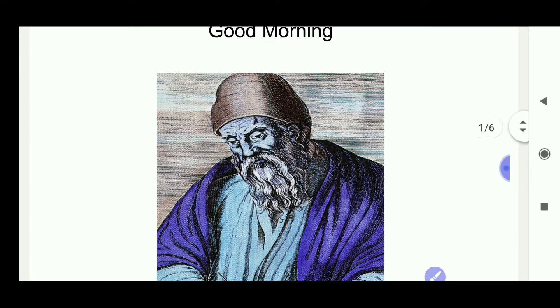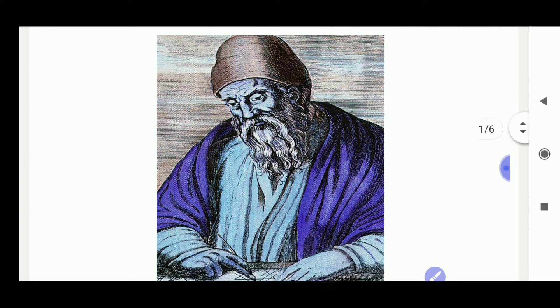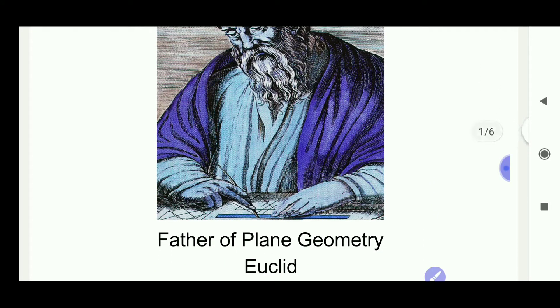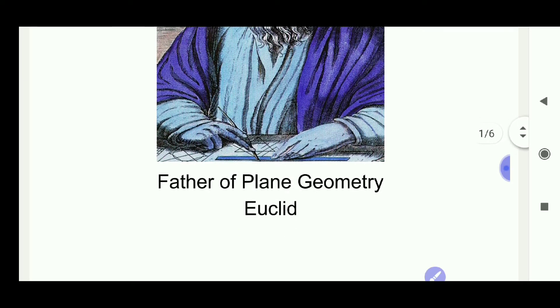Who is he? Yes, he is Euclid. He travelled all over the world, collected and compiled geometry and wrote 13 volumes of books named The Elements. So he is called father of plane geometry.